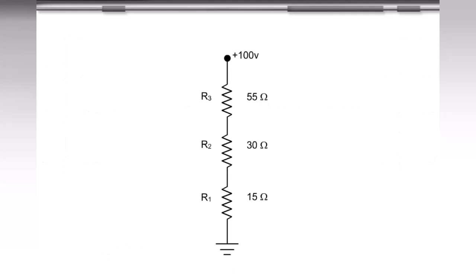In a series resistive circuit, as shown, the voltage drop across each resistor is proportional to the resistor value.